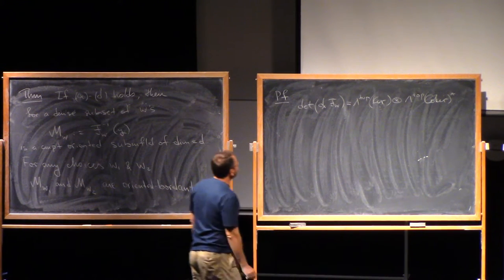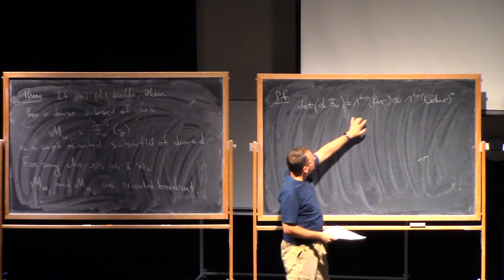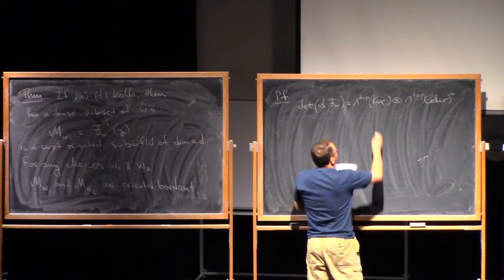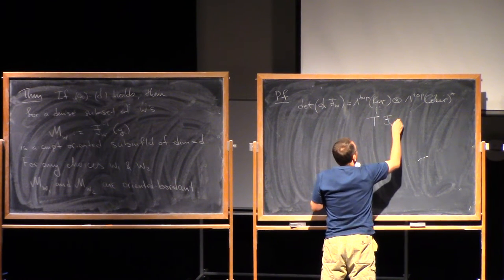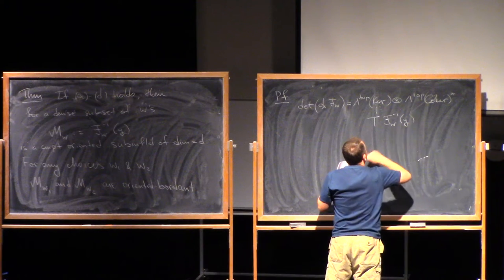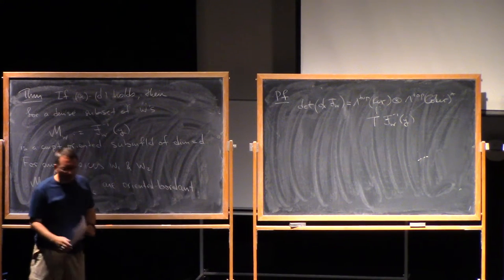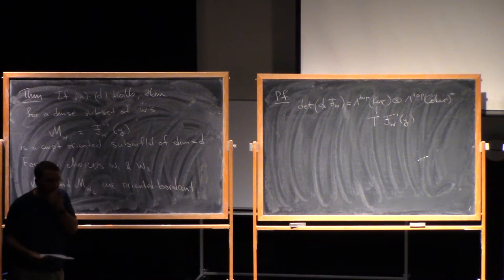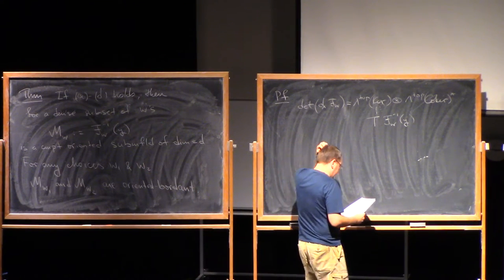This part is not here. And the fact that this is trivialized means that this guy is trivialized, but this is the tangent space to fw minus 1 of y. So we have a trivialization of the top exterior power of the tangent bundle, and this exactly gives us an orientation.